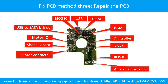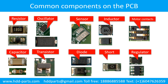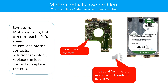Fixing the hard drive printed circuit board — Method 3: Repair the printed circuit board. This picture shows the basic components and their functions on the hard drive printed circuit board. Motor contacts loose problem: Symptom — the motor can spin but cannot reach its full speed. Cause — loose motor contacts. Solution — resolder or replace the loose contacts, or replace the PCB.